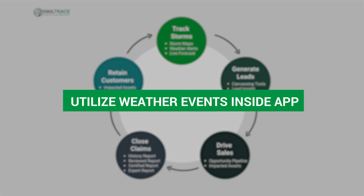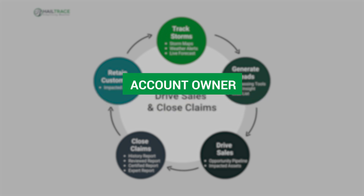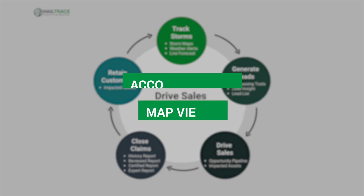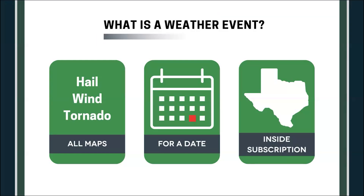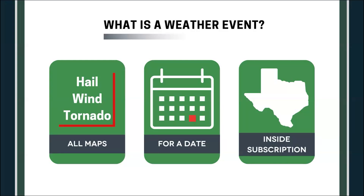To utilize our weather events inside of the app, you do have to be either the account owner or a map viewer role. So what is a weather event? If you go inside of the Hail Trace app and pull a weather event, it includes all of the maps we have available — hail, wind, and tornado — for a specific day that you're looking at inside of your subscription area, whether that is a city plan, state plan, or national plan.